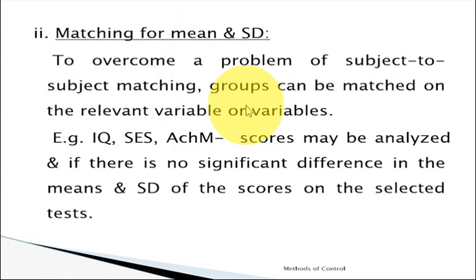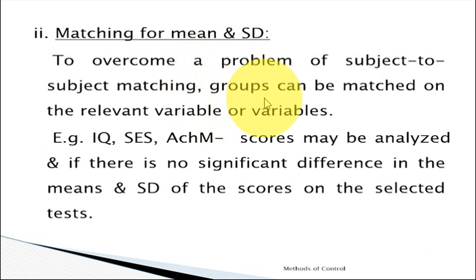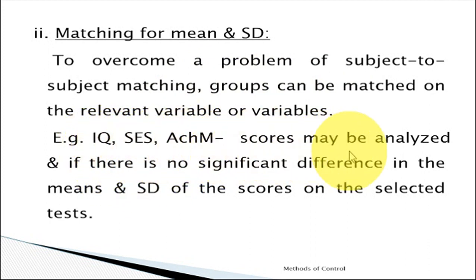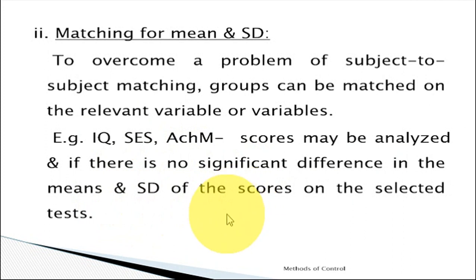A test may be conducted on a group of learners. Students belonging to the average mean may be selected, and the extreme cases may be left out. From those having an average mean, subjects may be selected, matched, and put one in the control group and one in the experimental group. For example, IQ, SES, and achievement motivation scores may be analyzed, and those having the same mean and standard deviation on a selected test may be matched and then assigned into the control group or the experimental group.